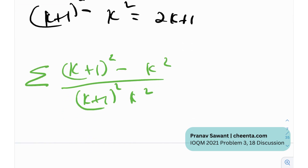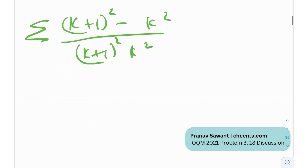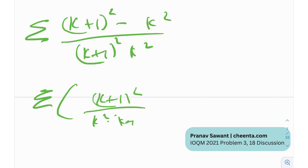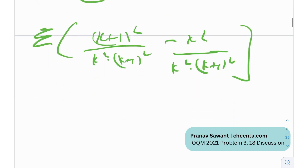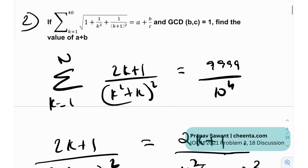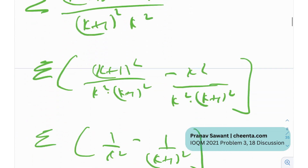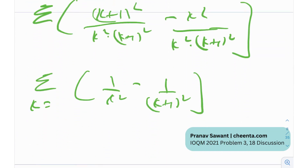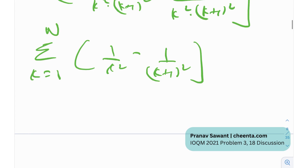So I can write the numerator as (K+1)² minus K², and the denominator as (K+1)² times K². We're applying the summation over this, so I can write this as sigma of (K+1)²/(K²·(K+1)²) minus K²/(K²·(K+1)²). This gives us sigma of 1/K² minus 1/(K+1)², running from K equals 1 to N.